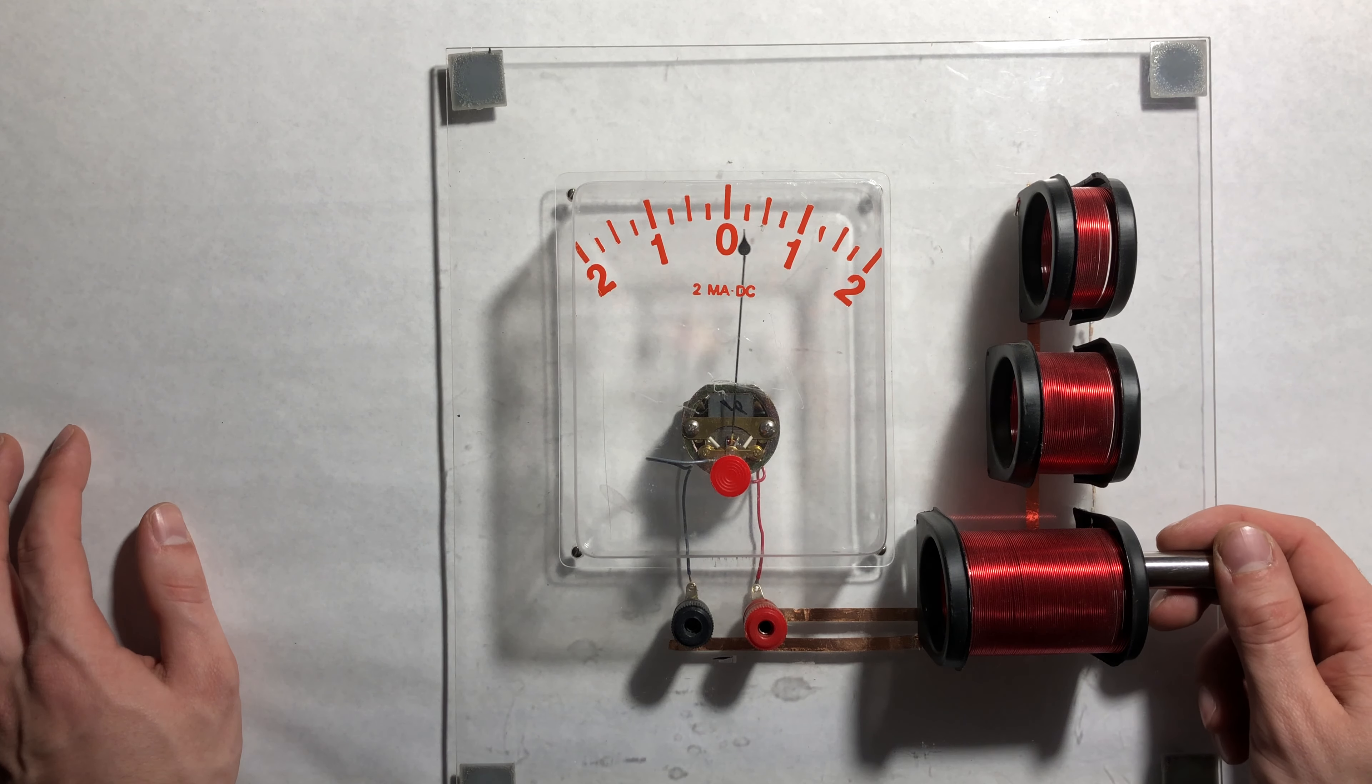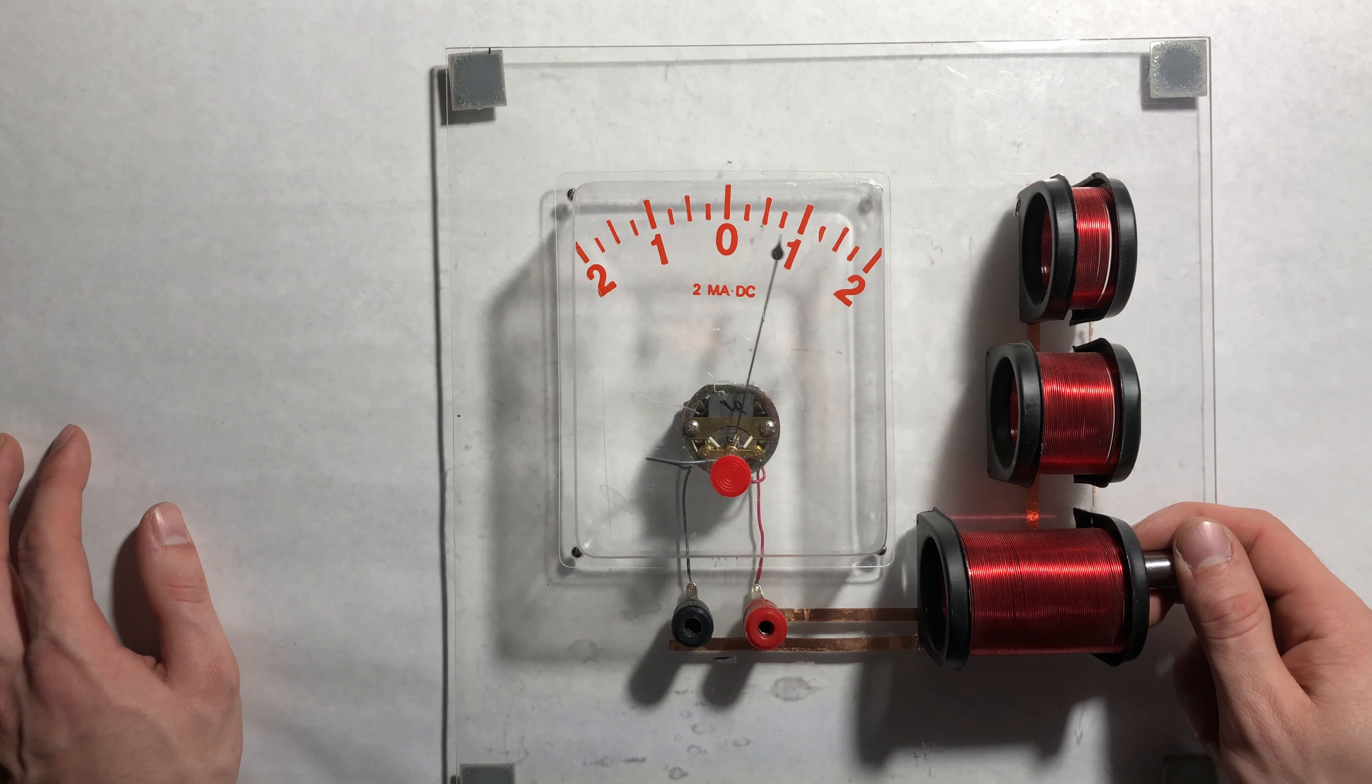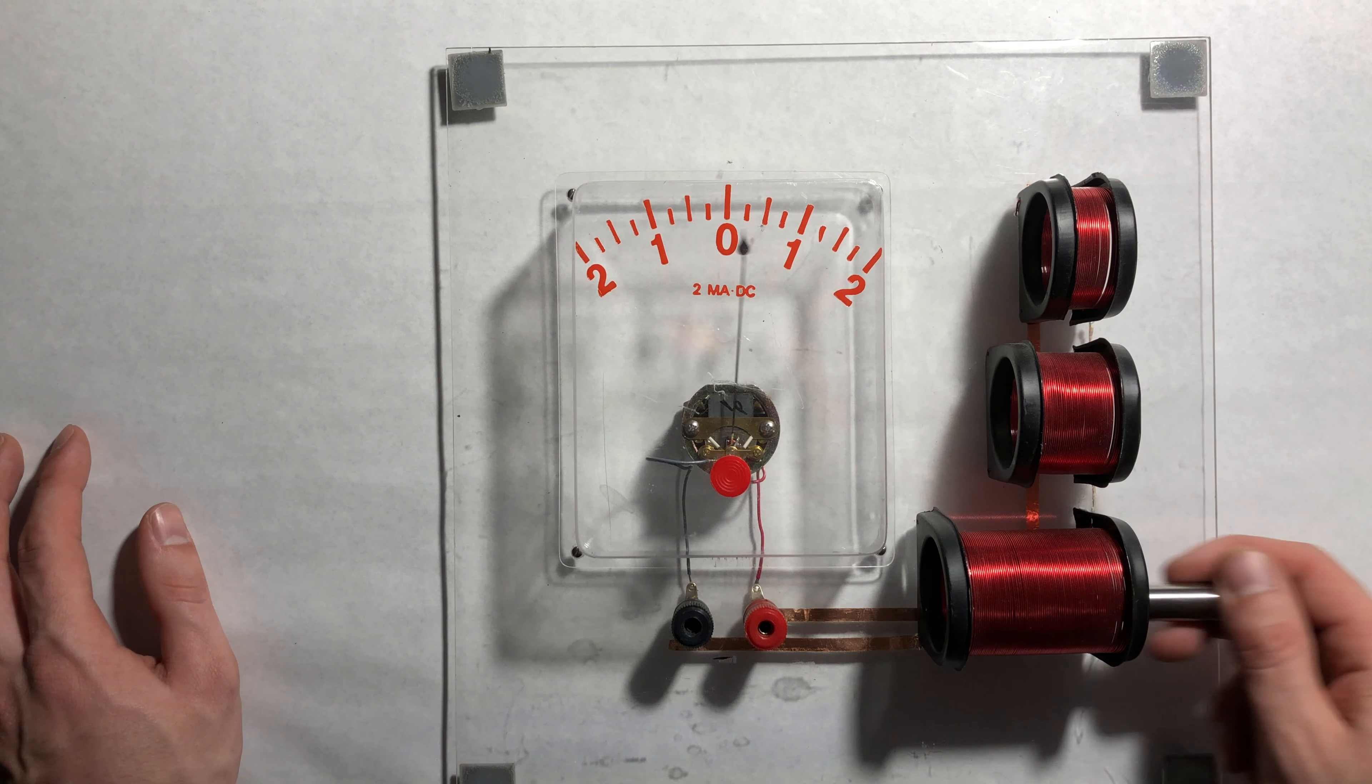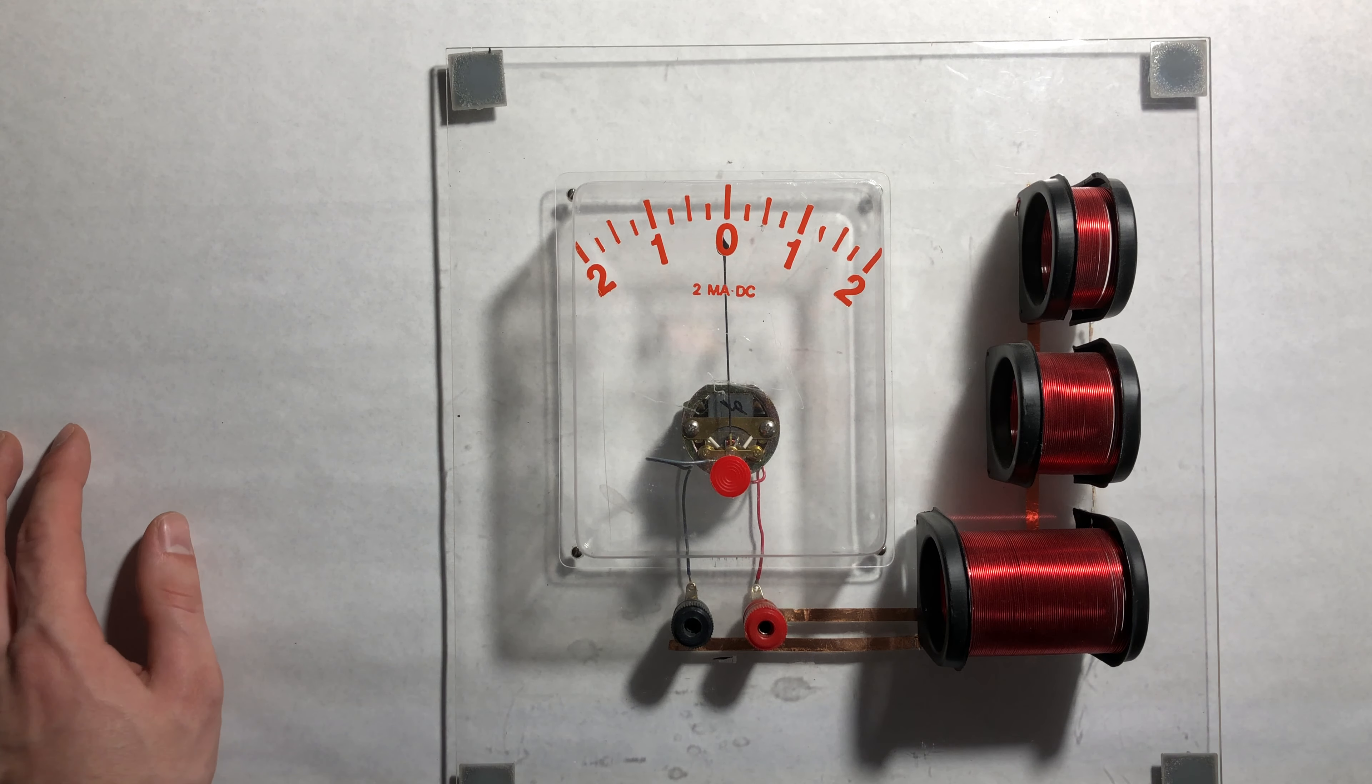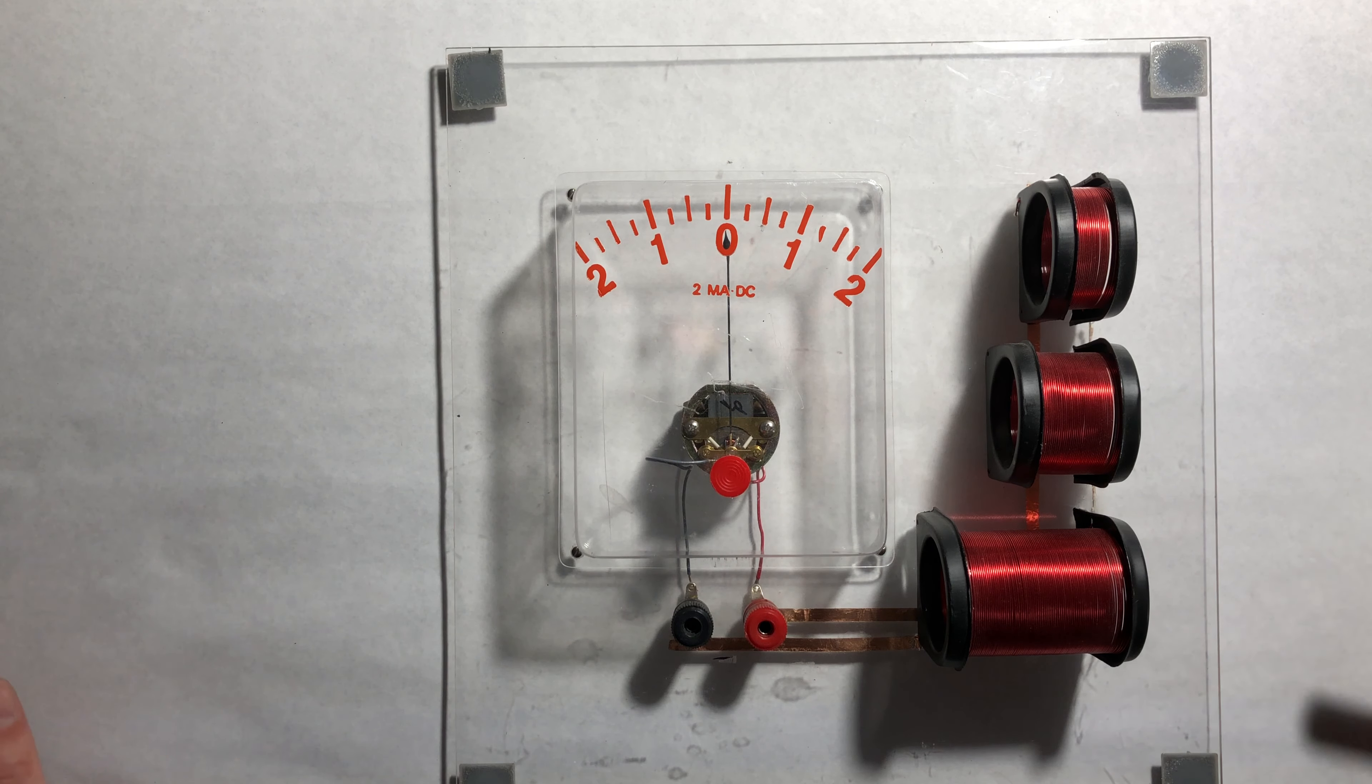So this is an excellent example of changing magnetic flux in the area of a coil inducing a current in that coil, and depending on if we increase the field lines in the coil or decrease the field lines in the coil we can see that we get a somewhat equal but opposite reaction from our galvanometer.